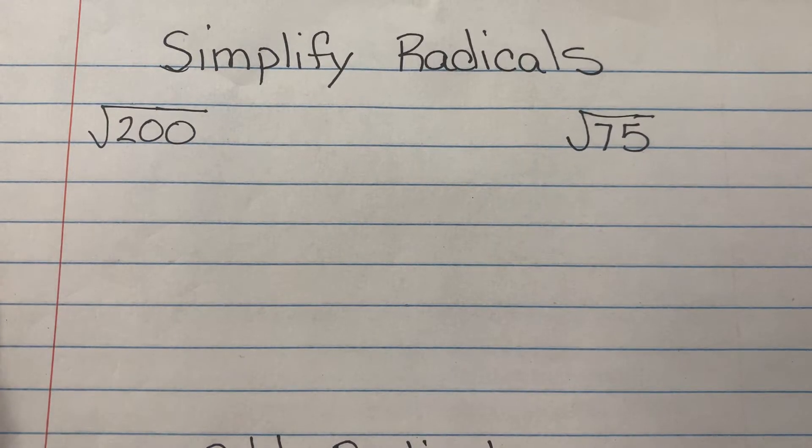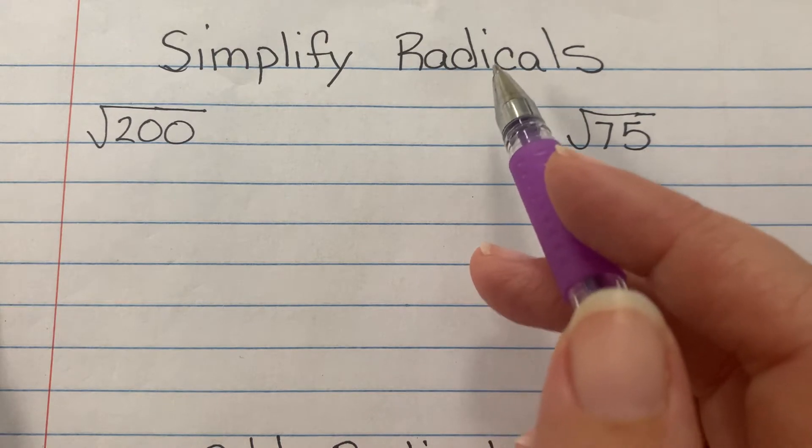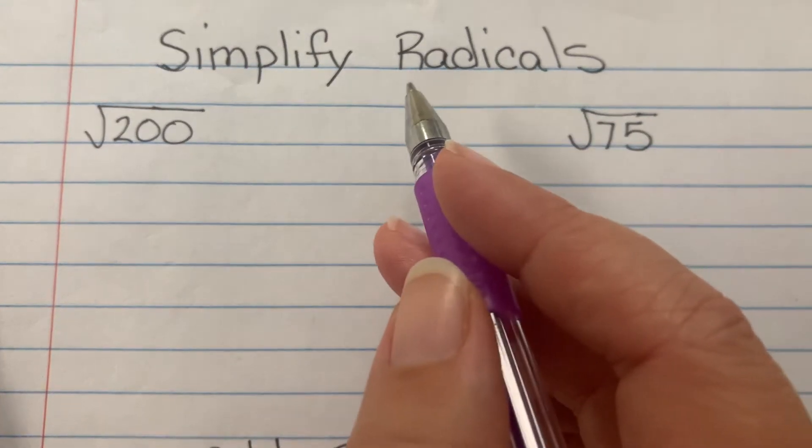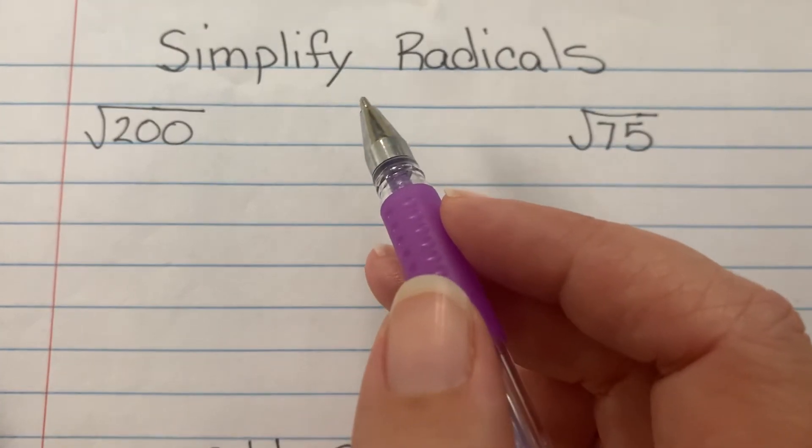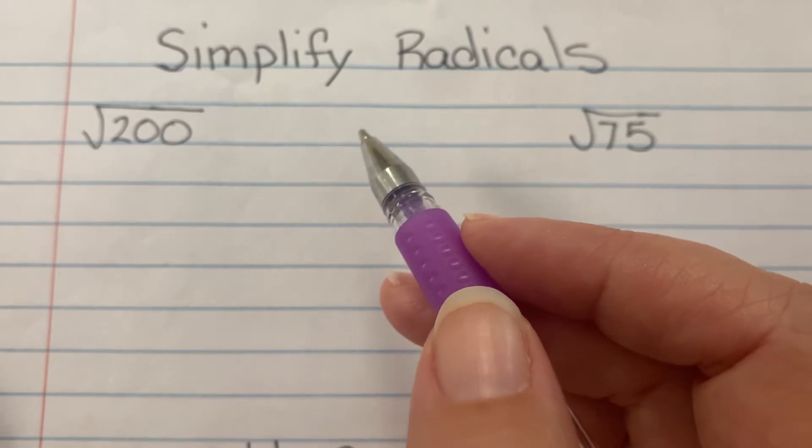Here is just a quick video on simplifying radicals. A radical is really just another name for a square root, and the difference with simplifying compared to estimating is that with simplifying you'll probably still have a square root at the end, whereas estimating you end up with a decimal.